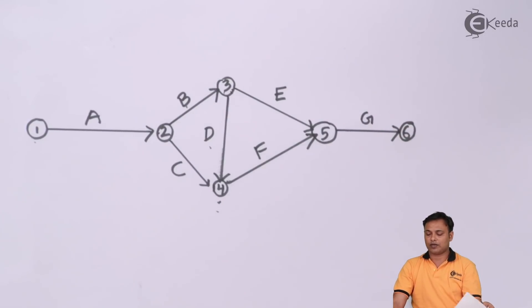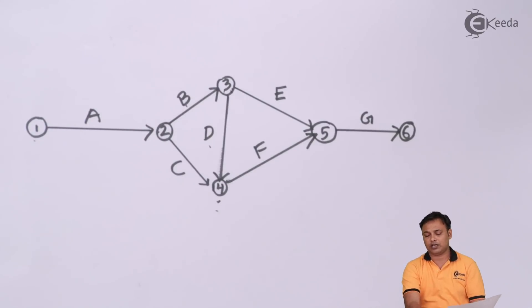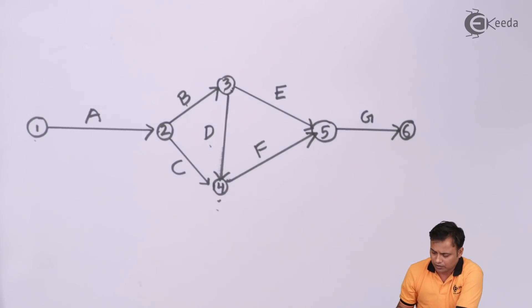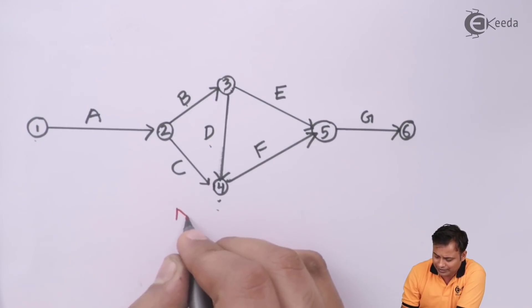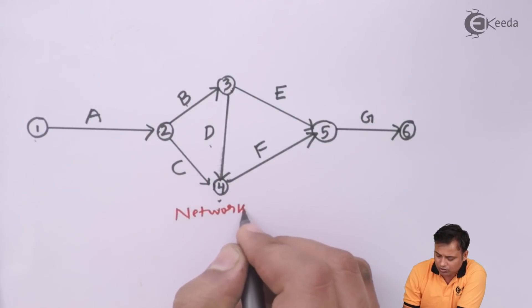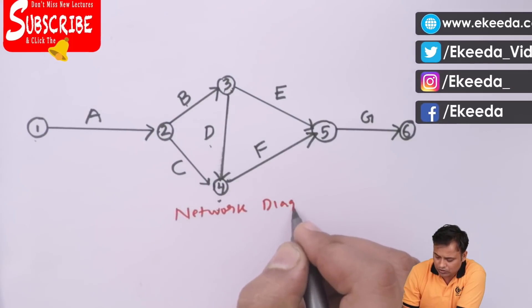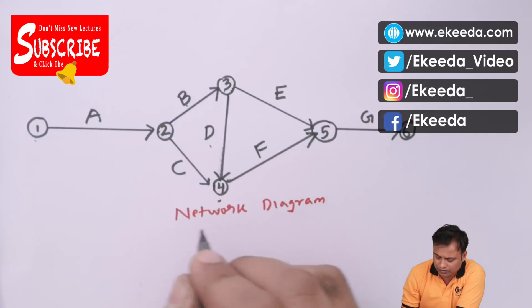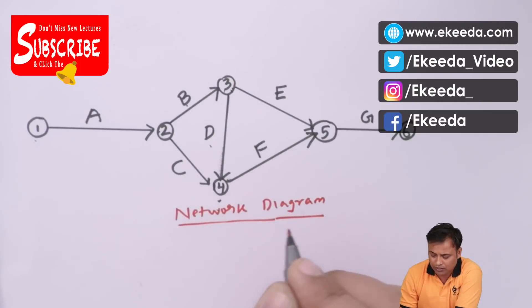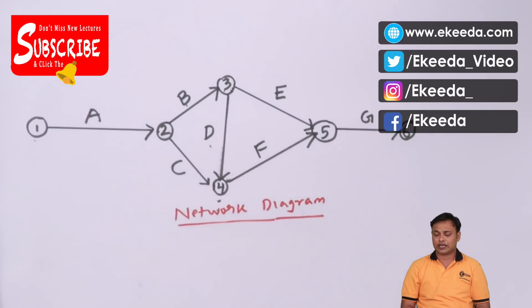So this problem, it was a bit different from the earlier one. We had been given the nodes in the question itself and so we drew the diagram directly by using the nodes. There was no separate conditions given as such which is the preceding activity or which is the succeeding activity.